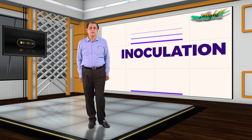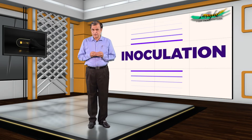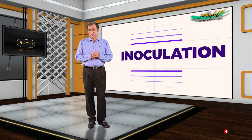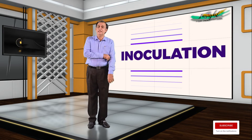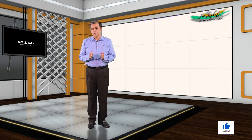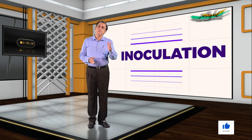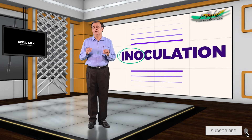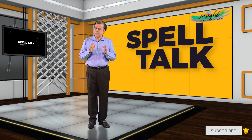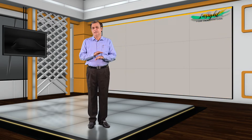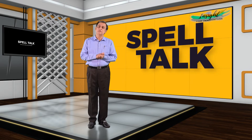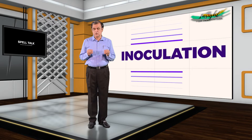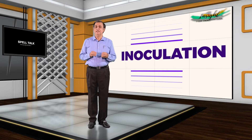Now we can consider another word: inoculation. Inoculation means protecting a person from a dangerous disease by injecting a mild form of the disease. The tricky area in the word is I-N-O — in most words of this kind we might expect double N, but in this word N is single. In fact, all the letters in this word are single. The spelling is I-N-O-C-U-L-A-T-I-O-N.